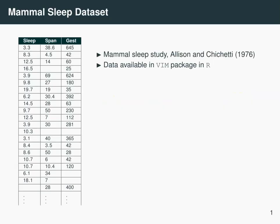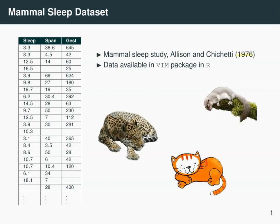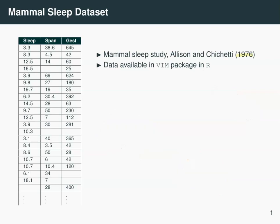I'm going to use a dataset on mammals and factors affecting their sleep. The study is from the 70s and it looks at lots of different mammals, big and small, and it looks at how many hours they sleep, how long their lifespan is, how big their brains are, and lots of different factors. The dataset is available in the VIM package in R.